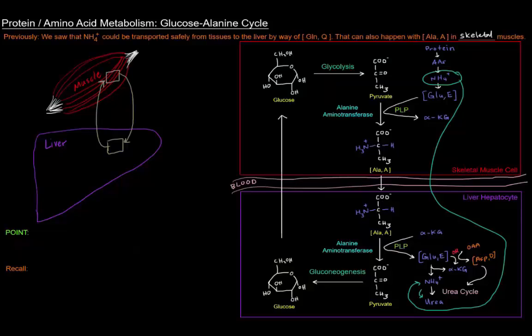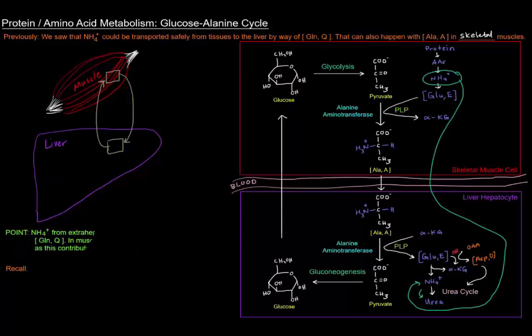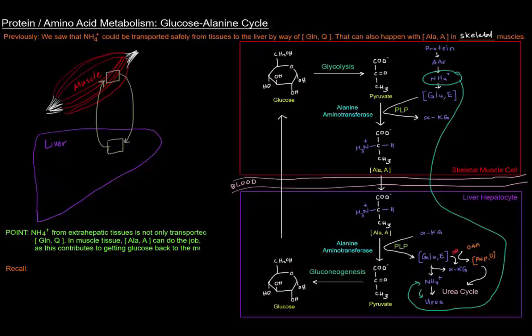So the point here basically is that the ammonium ion from extrahepatic tissues is not only transported by glutamine. That's one point here. It can also, in muscle tissue, alanine can do the job, especially because this contributes to getting glucose back to the muscle tissue, so that skeletal muscle tissue can go through and metabolize that for energy.